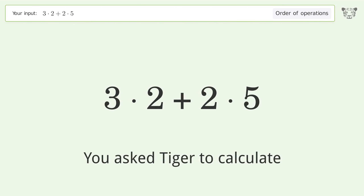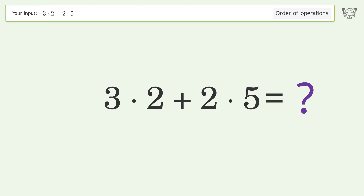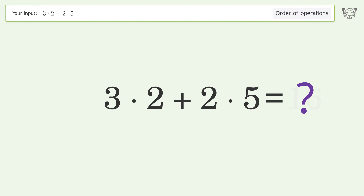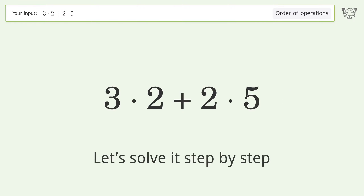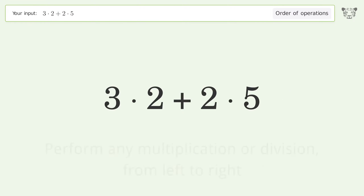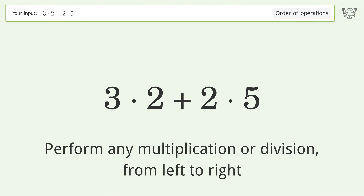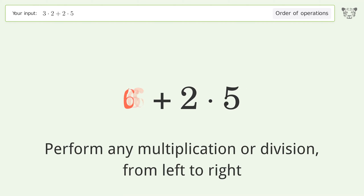You ask Tiger to calculate. This deals with the order of operations — the final result is 16. Let's solve it step by step. Perform any multiplication or division from left to right: 3 times 2 equals 6.